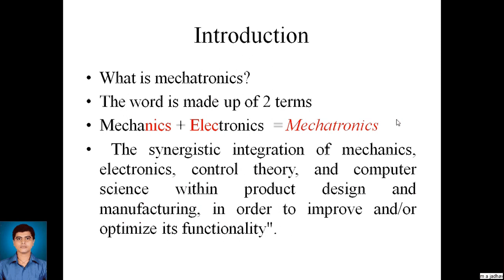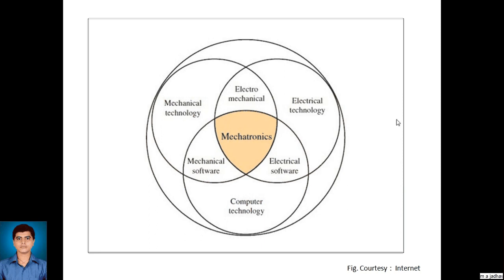Basically, mechatronics is an interdisciplinary branch involving different disciplines of engineering like mechanical engineering, electronics engineering, control engineering, and computer science engineering — all integrated into one branch which is mechatronics — used to improve some system or design some automation system. This Venn diagram on the screen explains the integration of different branches: mechanical technology, electrical technology, and computer technology, and the clubbing of all these gives us mechatronics.